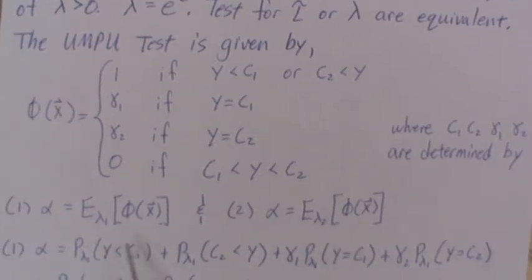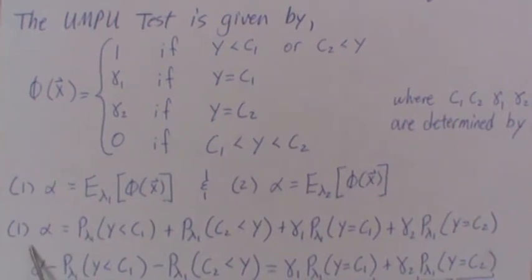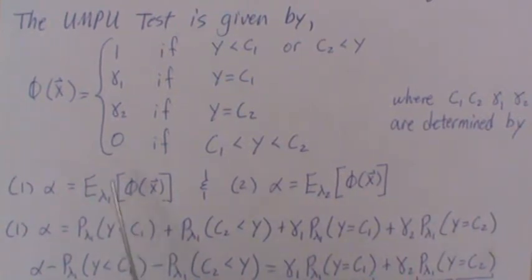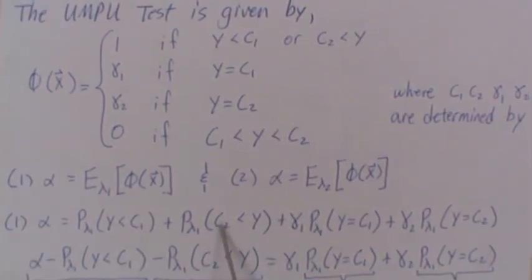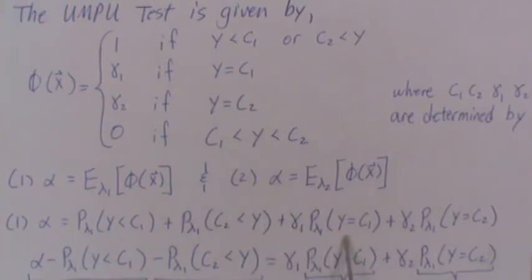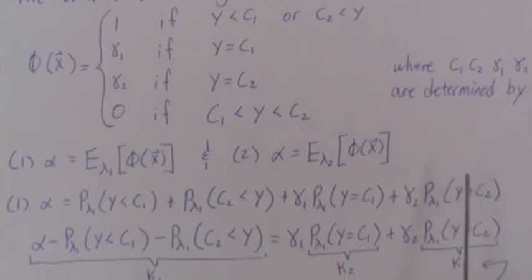Now let's start looking at these equations in more detail. Let's look at the first equation. Alpha is equal to the expected value. Now the phi is a discrete value, takes on discrete values. So the expected value is the probability it can assume times the probability of assuming that value. So it's 1 times the probability of assuming this value, which is this piece and this piece, then it's gamma 1 times that probability, and then gamma 2 times the probability that Y is equal to C2.